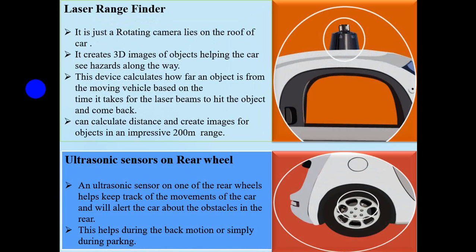Laser Range Finder. It is a rotating camera that lies on the roof of the car. It creates 3D images of objects, helping the car see hazards along the way. This device calculates how far an object is from the moving vehicle based on the time it takes for the laser beam to hit the object and come back. It can calculate the distance and create an image of objects within a range of 200 meters.